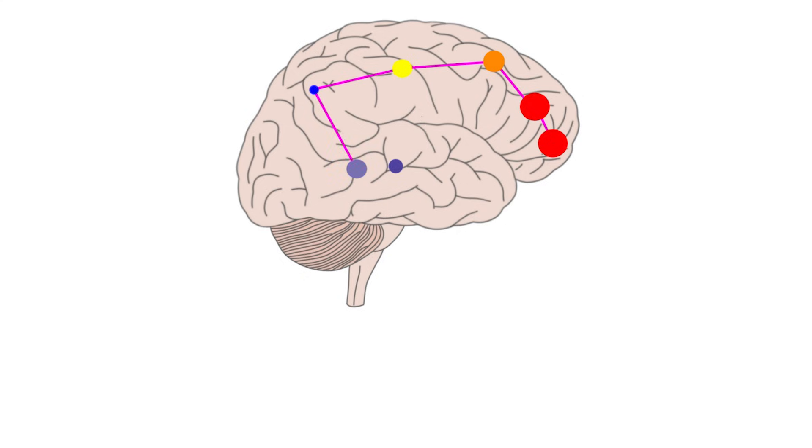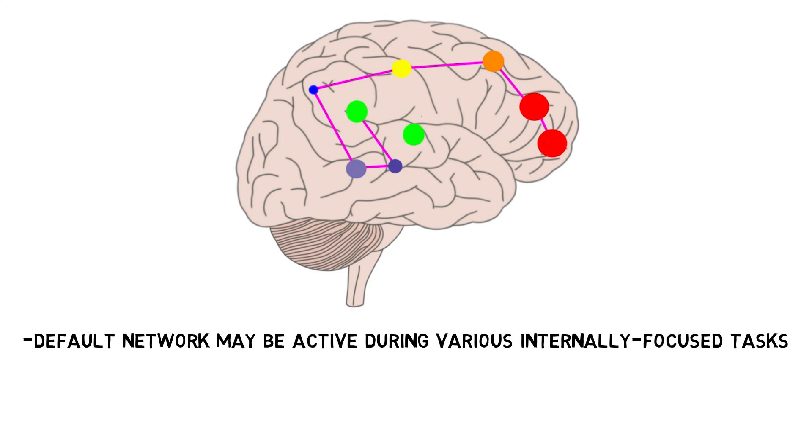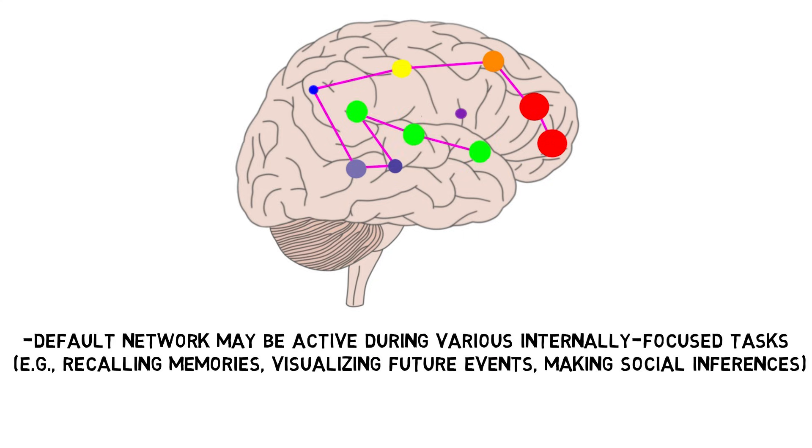This research indicates that the default mode network may be active during various internally focused tasks such as recalling memories, visualizing future events, and making social inferences. Thus, in addition to playing an important role in internally generated thought, the default mode network may be involved in some of the most advanced forms of human cognition.